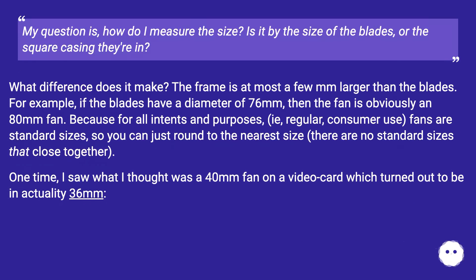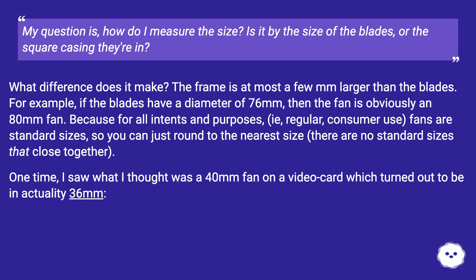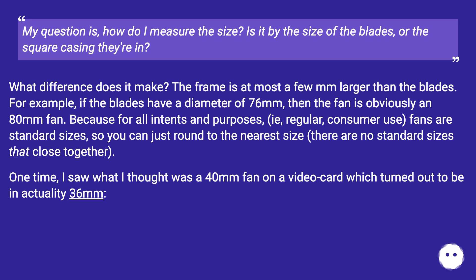As for how to measure the size — by blades or square casing — what difference does it make? The frame is at most a few millimetres larger than the blades. For example, if the blades have a diameter of 76mm, then the fan is obviously an 80mm fan.